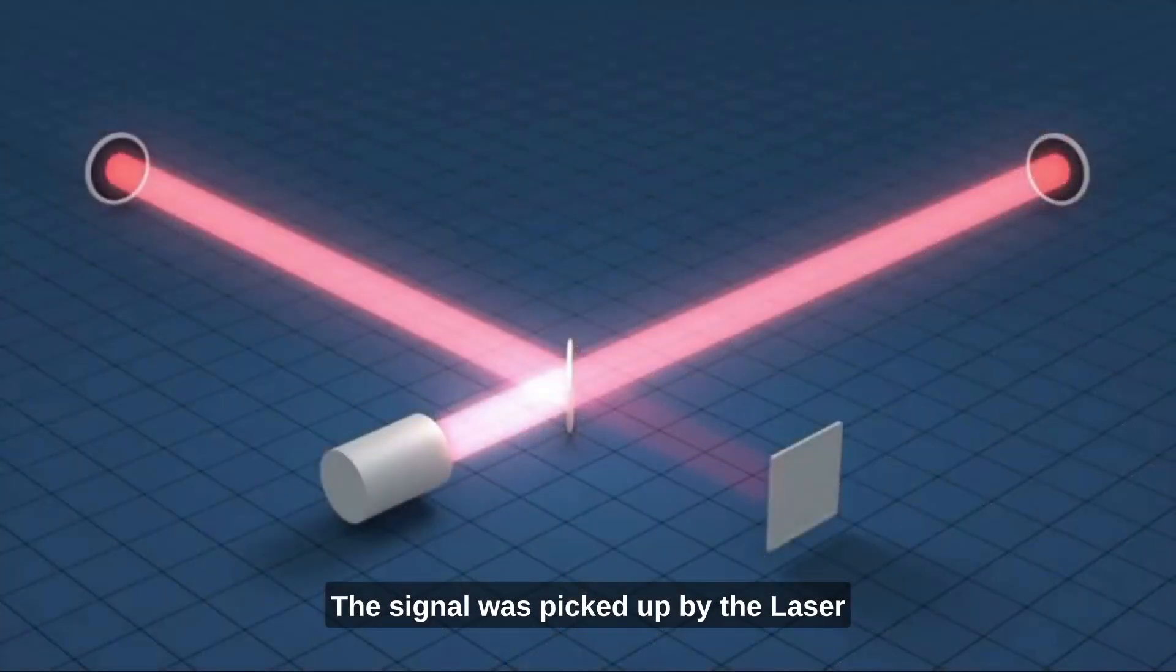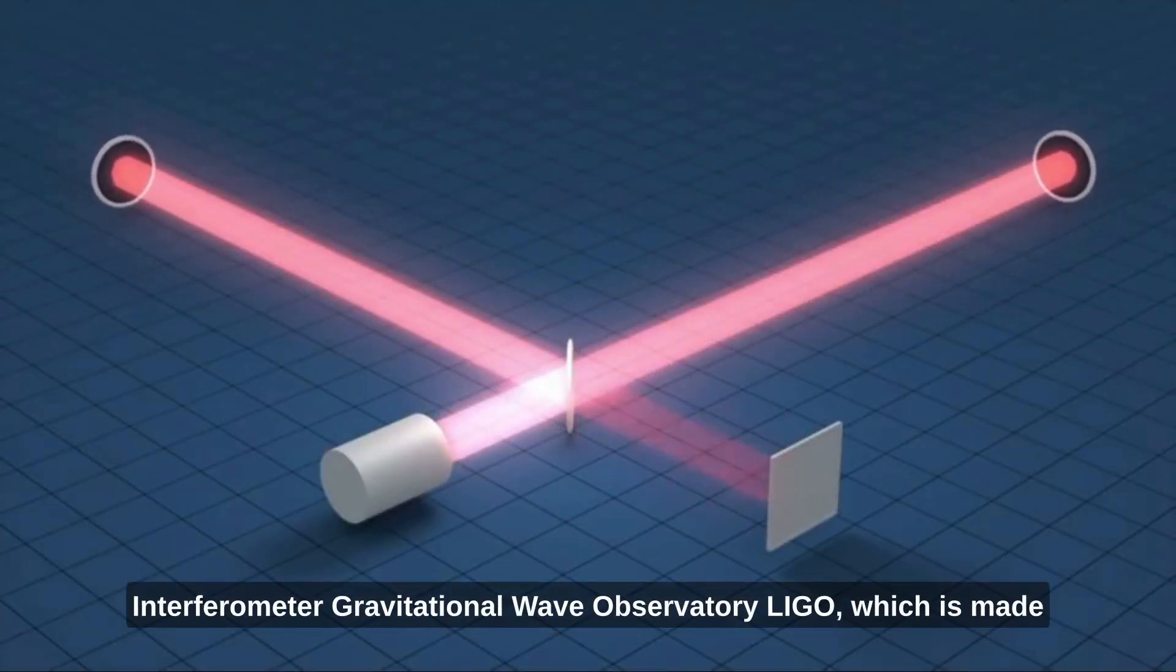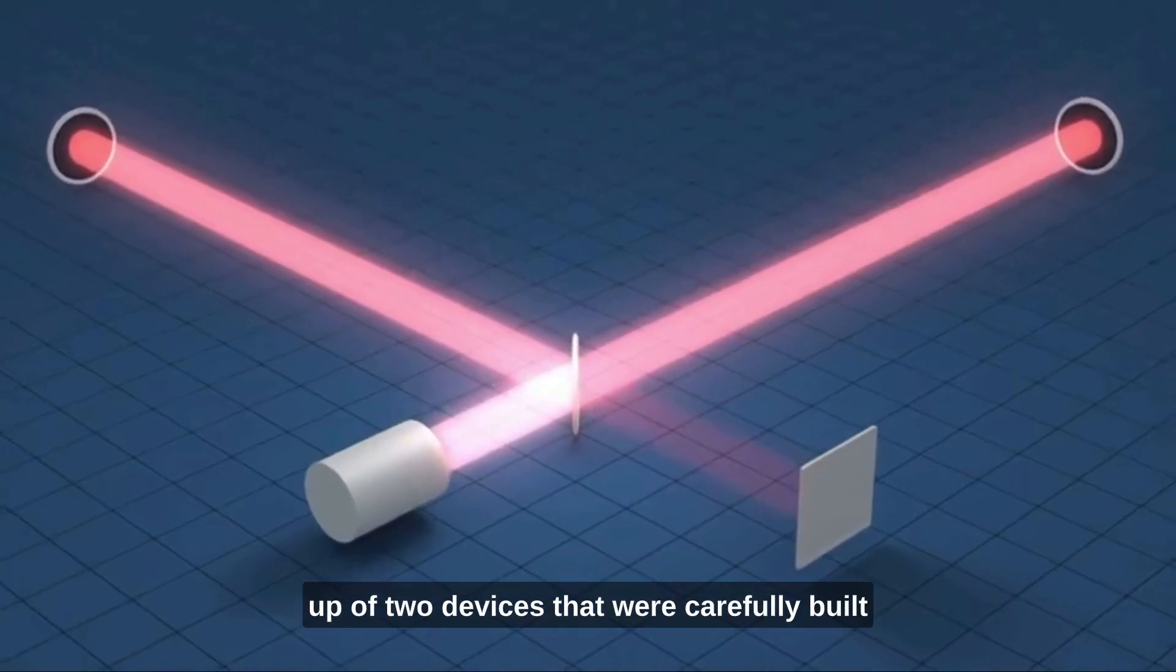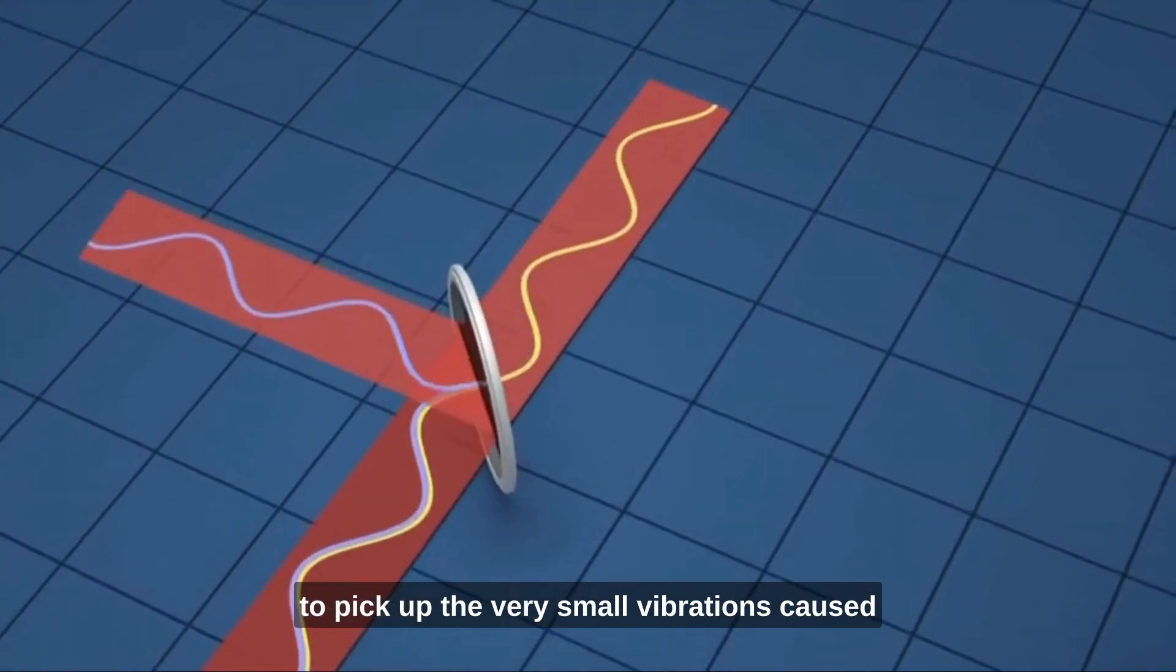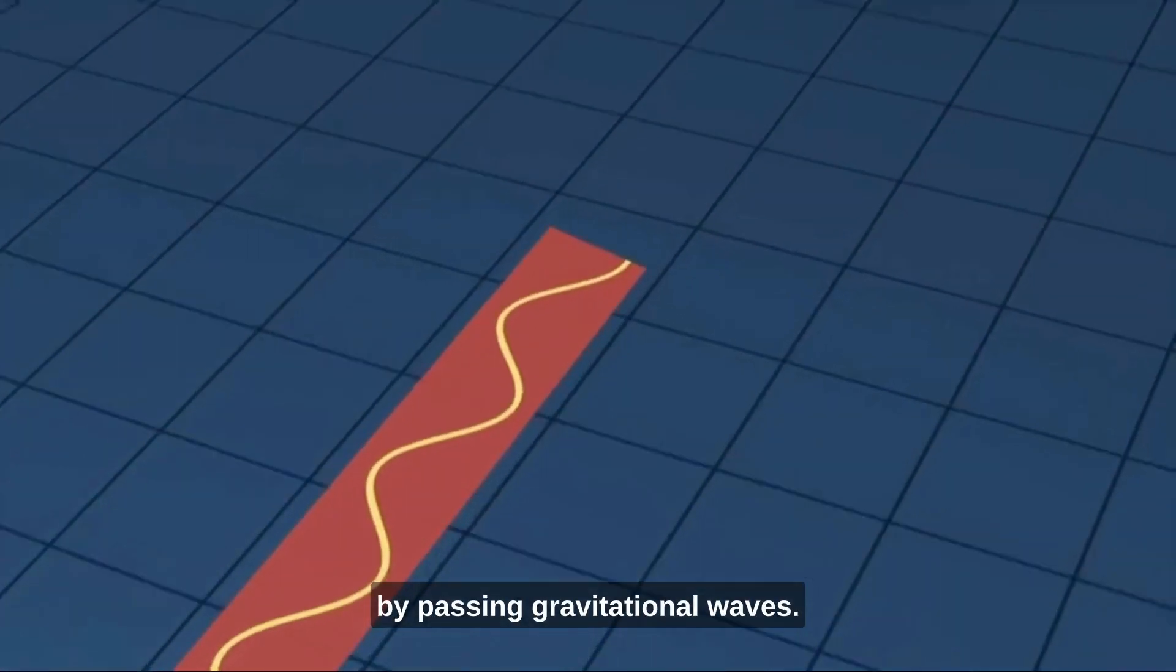The signal was picked up by the Laser Interferometer Gravitational Wave Observatory, LIGO, which is made up of two devices that were carefully built to pick up the very small vibrations caused by passing gravitational waves.